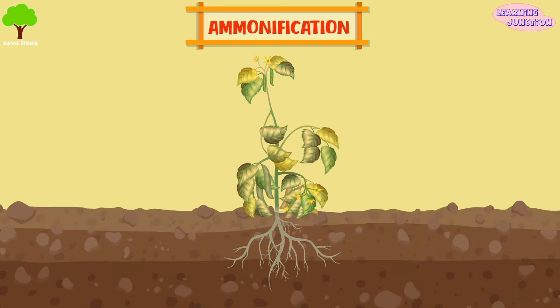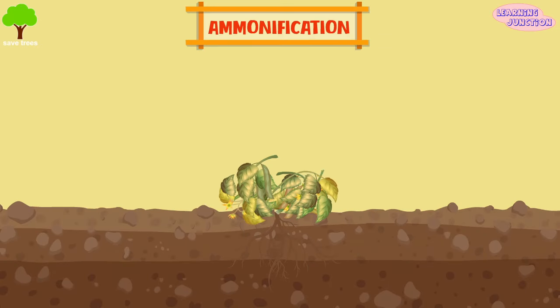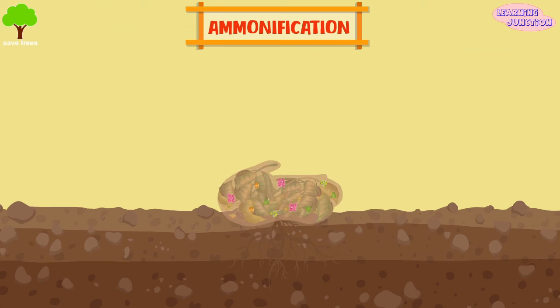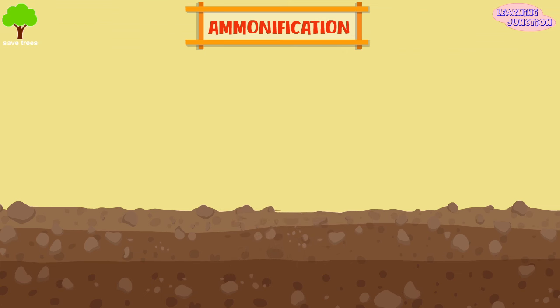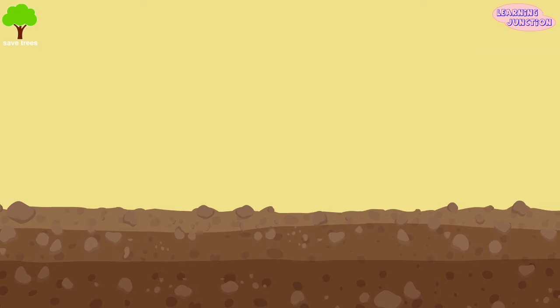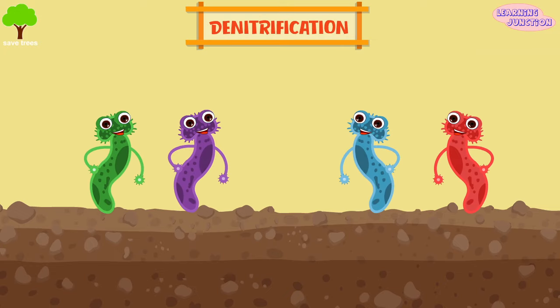Ammonification. When a plant or animal dies, decomposers such as bacteria and fungi turn the nitrogen back into ammonium. From here, it re-enters into the nitrogen cycle.